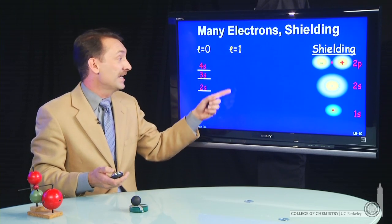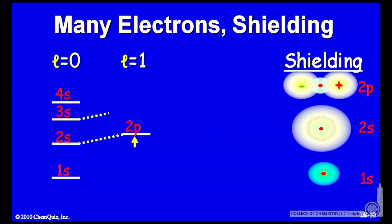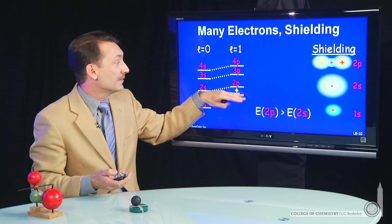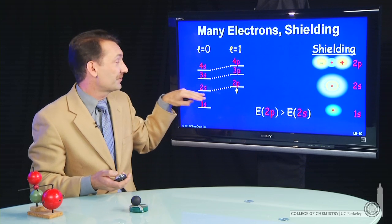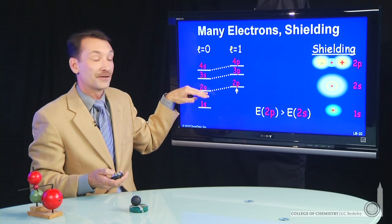If you look at how they affect the p orbitals, those that have L equal 1, they're shielding them. These levels are raised slightly because of the shielding effect of the s electrons.